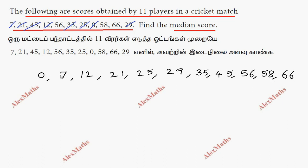So the total count: 1, 2, 3, 4, 5, 6, 7, 8, 9, 10, 11. So we have 11 data values. Total n is 11.